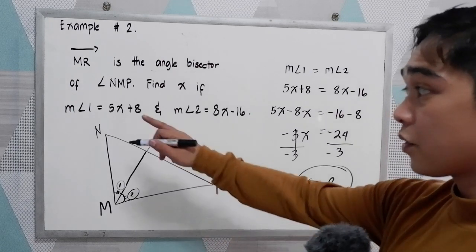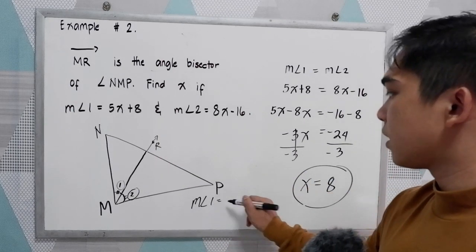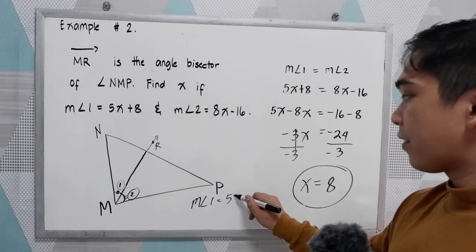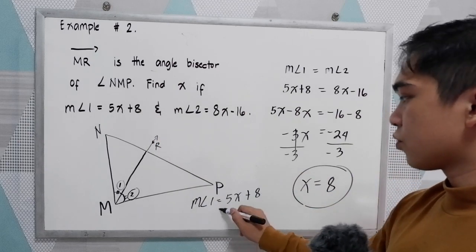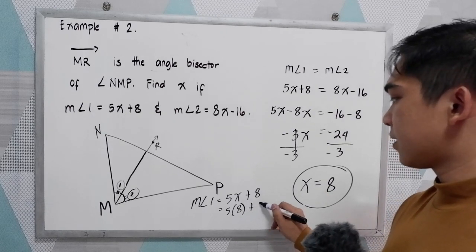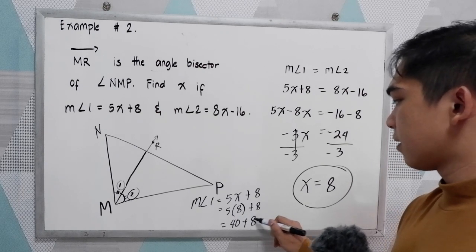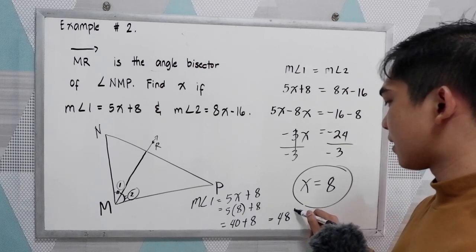So assuming we're going to find angle 1 and angle 2, measure angle 1 is equal to 5X plus 8, so 5 times 8 plus 8. We have 40 plus 8, that is 48 degrees.